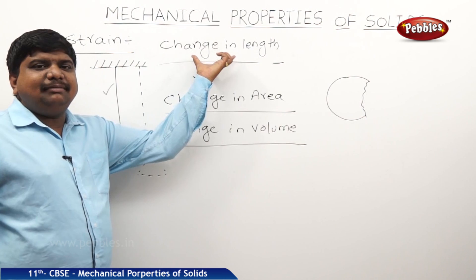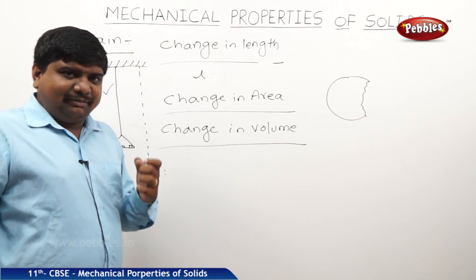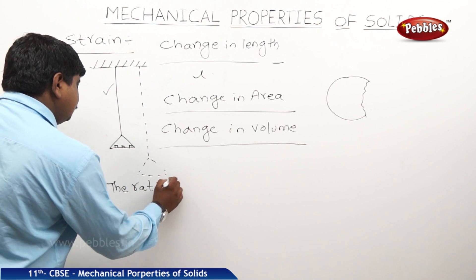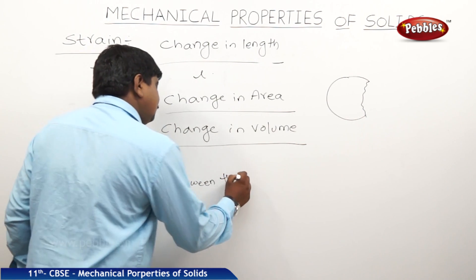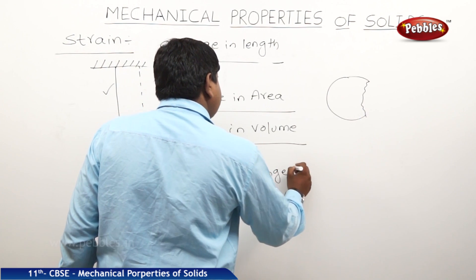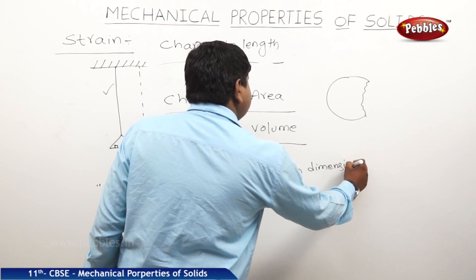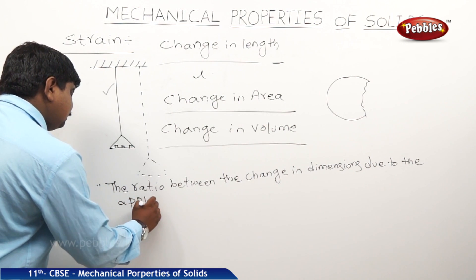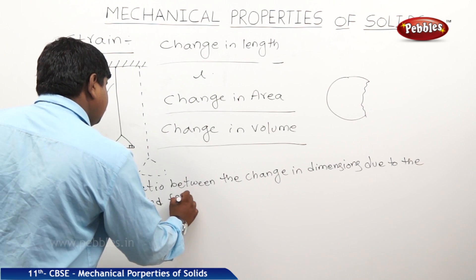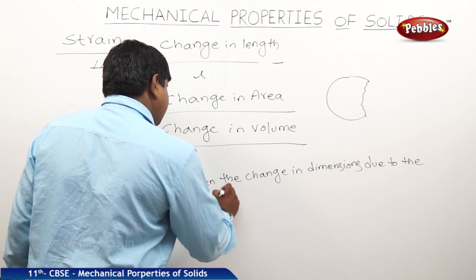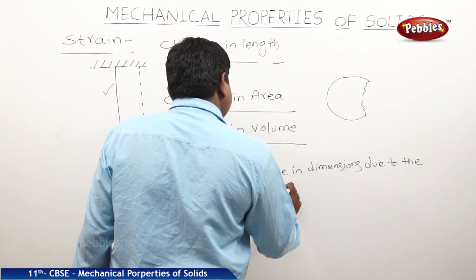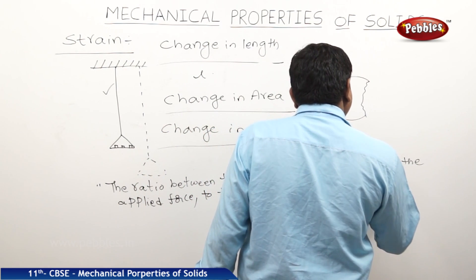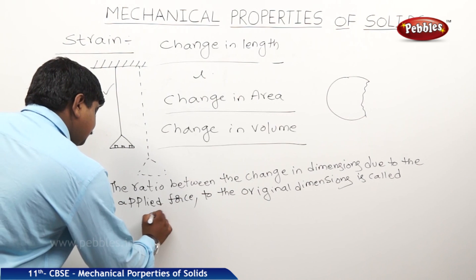The ratio between the change in the dimensions of the body due to the application of forces to its original dimensions is called strain. In other words: the ratio of the change in dimensions due to the applied force to the original dimensions is called strain.